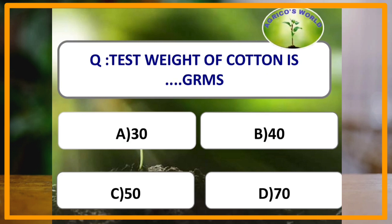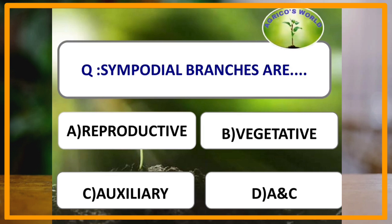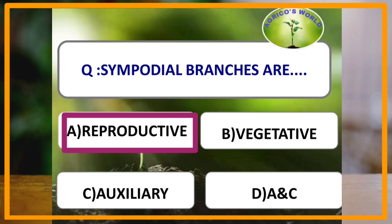The test weight of cotton is how many grams? The answer is 70 grams. Test weight means the weight of thousand seeds, and seed index means the weight of hundred seeds. Sympodial branches are which type of branches? Sympodial branches are the reproductive branches which end with a flower, whereas monopodial branches are the vegetative branches which have axillary buds that give rise to new branches.